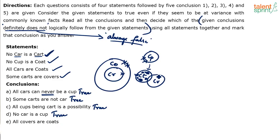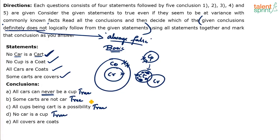Last conclusion: 'All covers are coats.' In the basic diagram, all covers are coats is wrong. But can all covers be coats? Yes, it is possible. The only statement given about covers is 'some carts are covers.' I can draw the cover circle entirely inside coats without violating any statement. So this is possibly true.